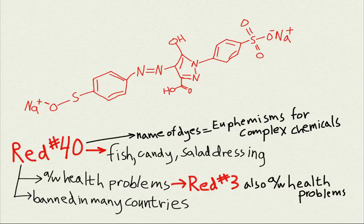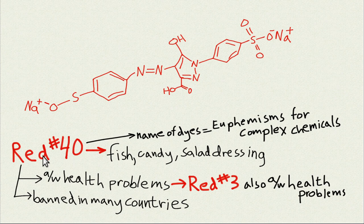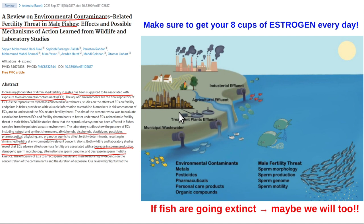Red dye number 40 is an estrogenic chemical. All these numerical food dyes are typically euphemisms for complex petroleum-based chemicals. These things are toxic — you do not want to feed your kids these, since children are attracted to candies containing them. Different food dyes have been associated with hyperactive behavior, attention deficit behavior, anxiety, depression, and decreased cognitive function. You really do not want to eat any processed food.